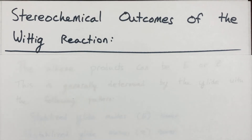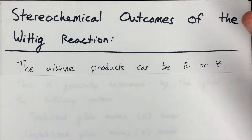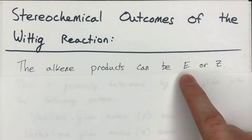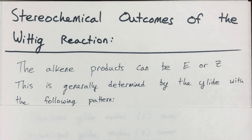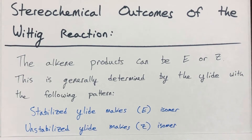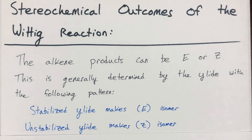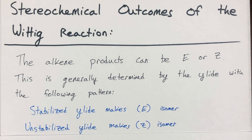Now we'll talk about the stereochemical outcomes of the Wittig reaction. There are ways to control whether you get an E or Z product. E is like trans and Z is like cis. This is generally determined by the ylid: a stabilized ylid makes the E (trans) isomer, and an unstabilized ylid makes the Z (cis) isomer. You need to be able to identify what is considered a stabilized versus unstabilized ylid to predict the stereochemistry of your product.